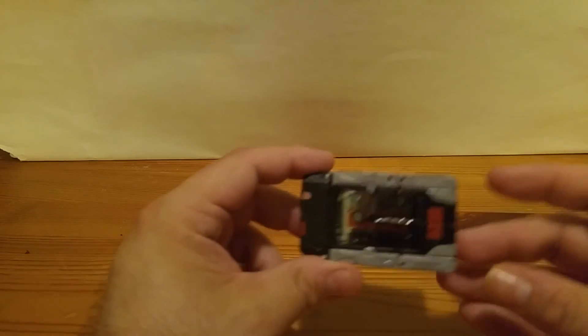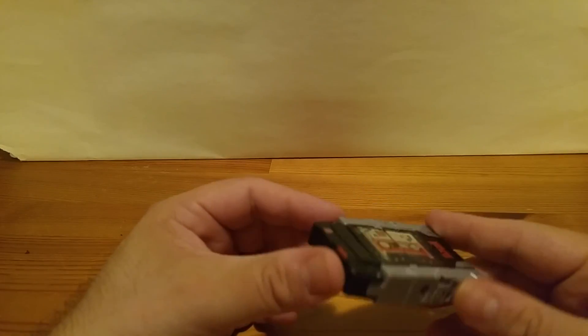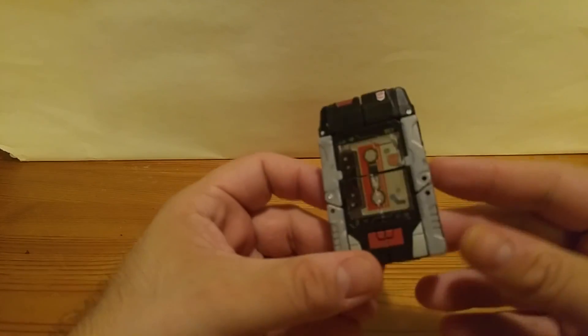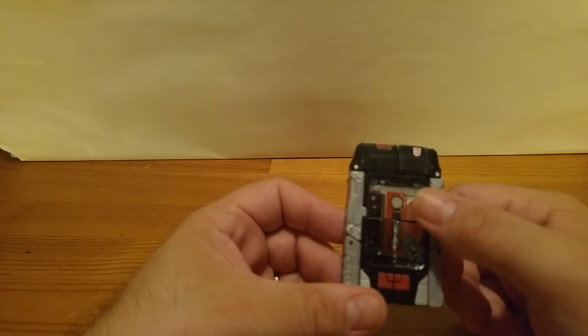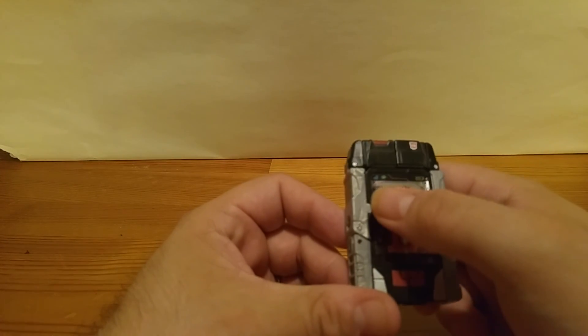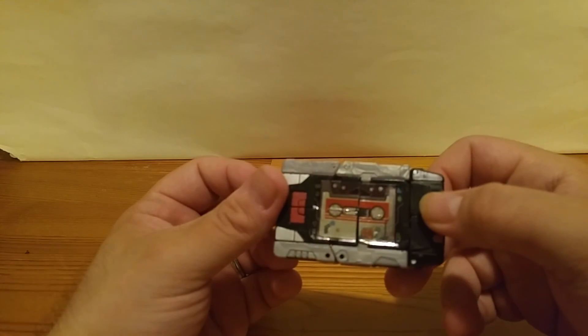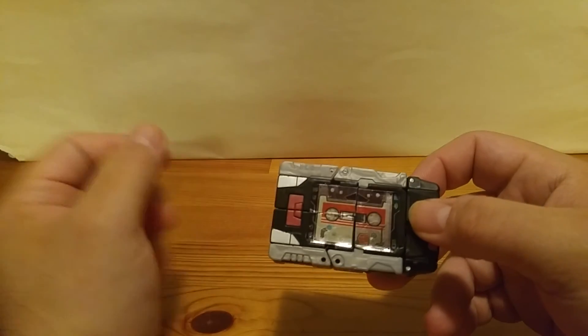So this right here turns into a tablet, as you can see. A little hard to make out, but it is a tablet. It has a screen here on the stickers. It shows a cellular signal on the top left, battery life on the top right, and has a cassette tape style background on it.